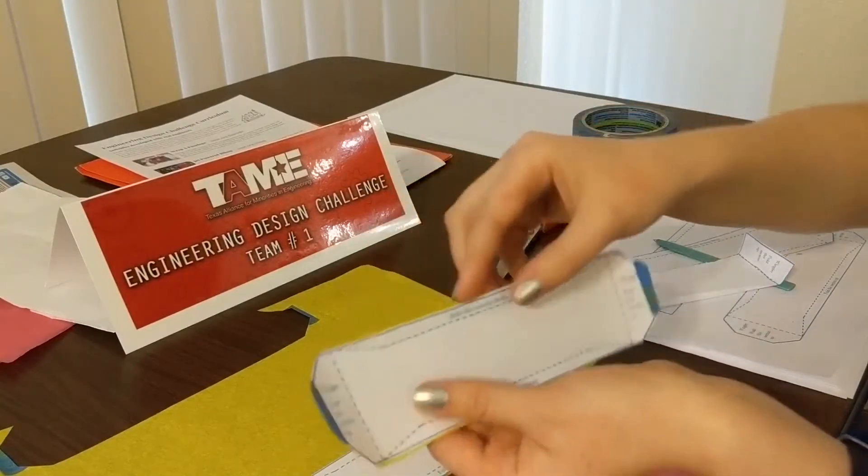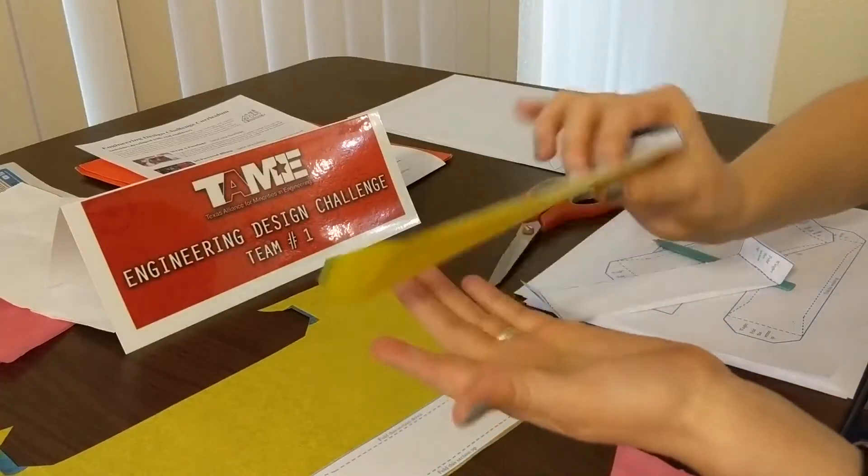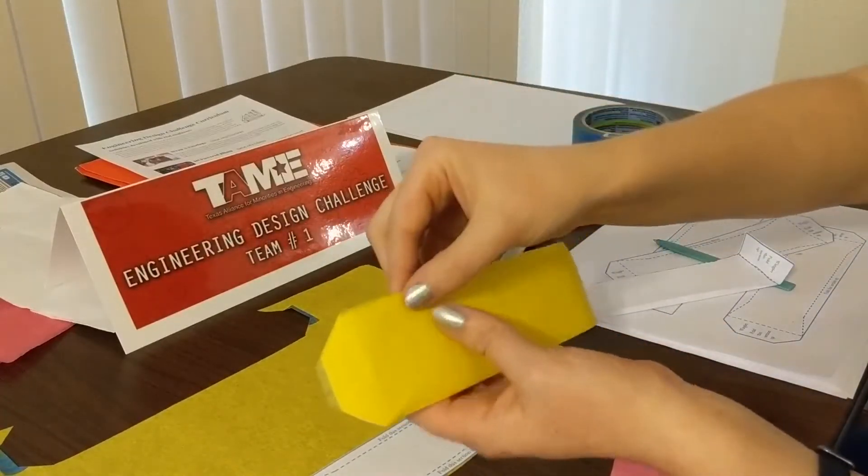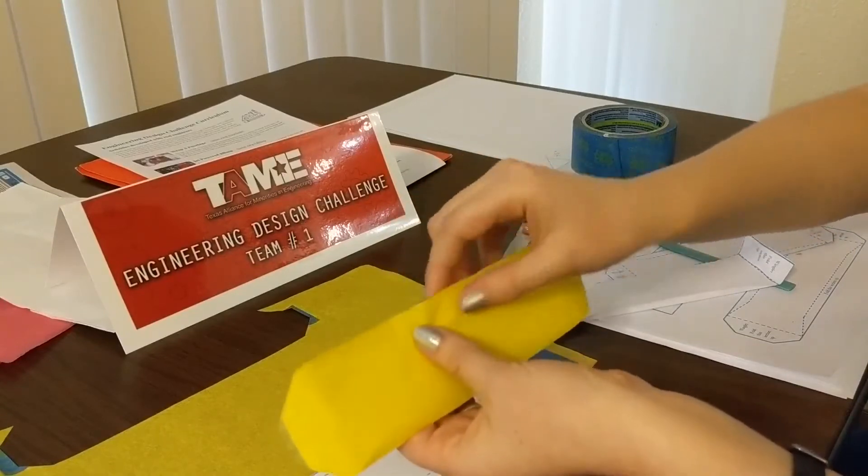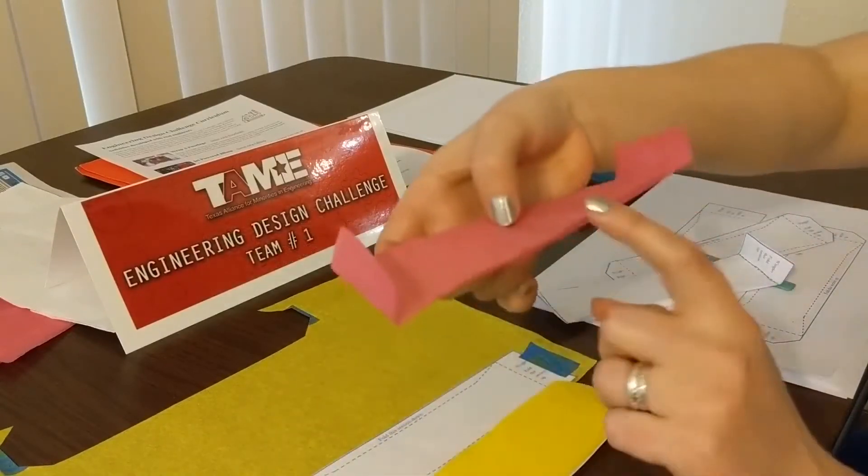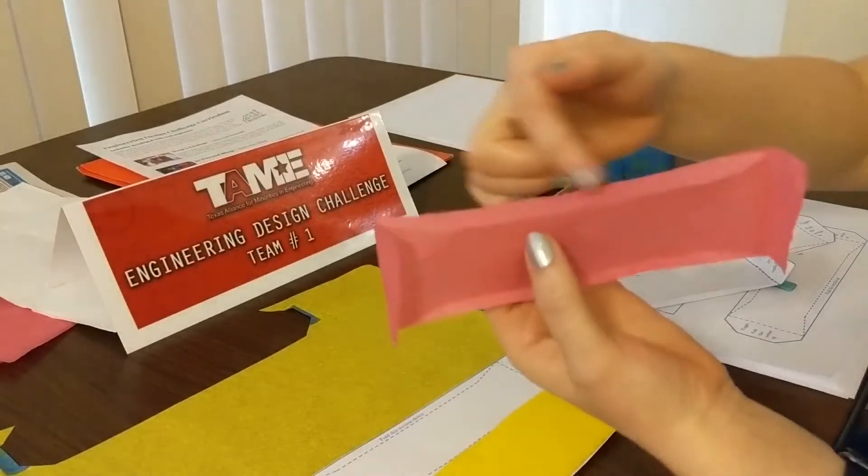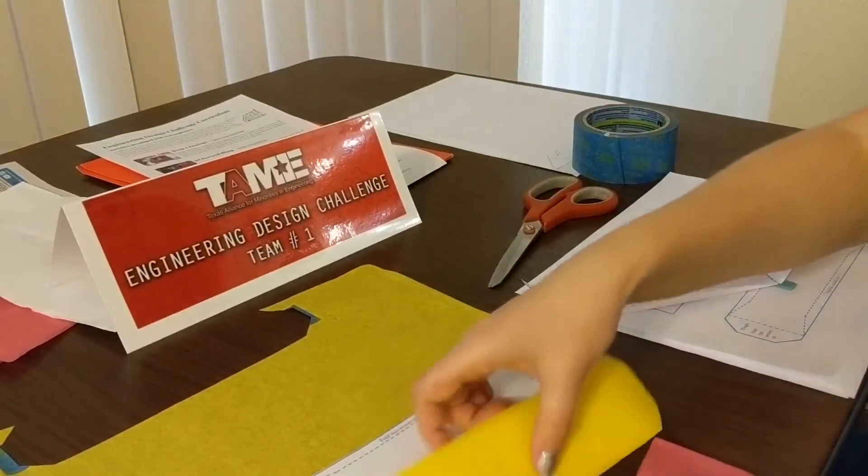So you fold this one towards you. Then you're going to flip it over and fold this side towards you as well. So looking at the finished tumblewing, you see how one side is folded up and the other side is folded down. So that's kind of what you're going for.